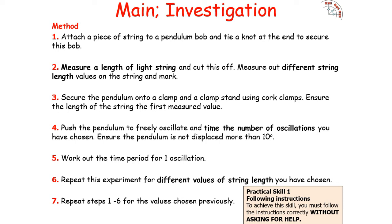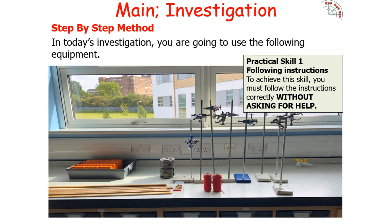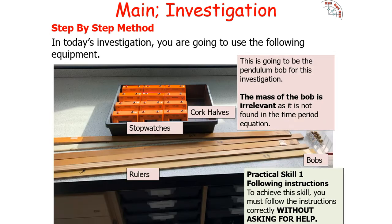Procedure: attach a piece of string to a pendulum bob and tie a knot at the end to secure the bob; measure a length of light string and cut it; mark different string lengths on the string; secure your pendulum onto a clamp and clamp stand using core clamps; ensure the length of string is your first measured value; release the pendulum to oscillate freely and time the oscillations; ensure the pendulum is not displaced by more than 10 degrees; work out the time period for one oscillation and repeat. You will need a ruler, stopwatch, core clamps, and pendulum bobs.